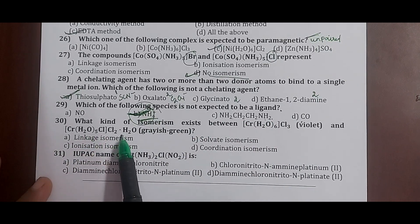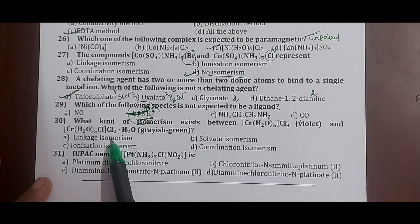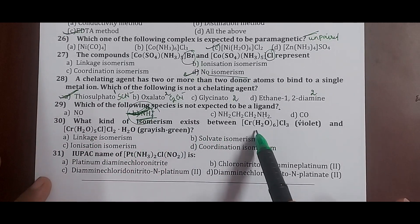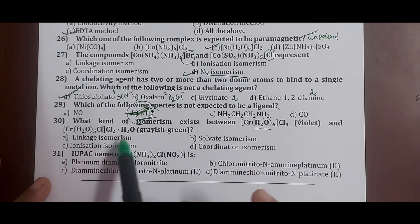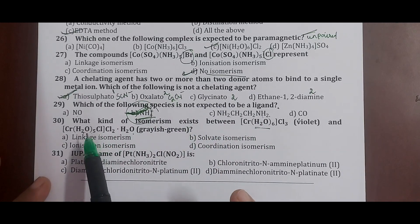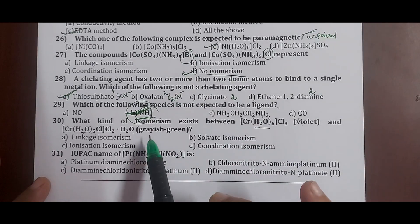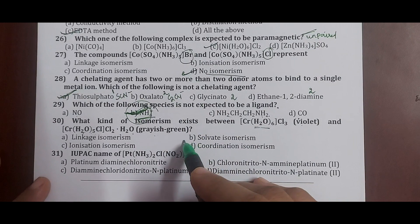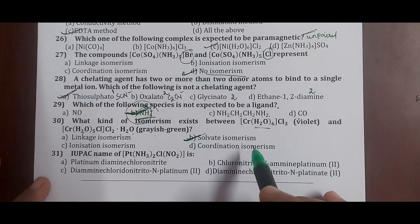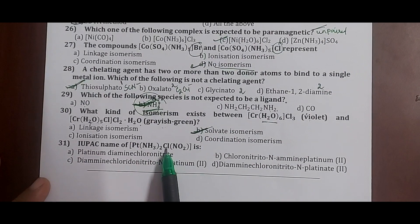Question 30: what isomerism exists between [Cr(H2O)6]Cl3 (violet) and [Cr(H2O)5Cl]Cl2·H2O (greyish green)? Both have the same molecular formula, but differ in the number of water molecules within versus outside the coordination sphere — six water inside in one, five inside and one outside in the other. This difference in ligands within the coordination sphere changes the color. This is solvate or hydrate isomerism. Correct answer: option B, solvate isomerism.